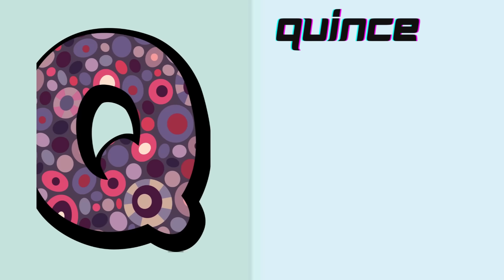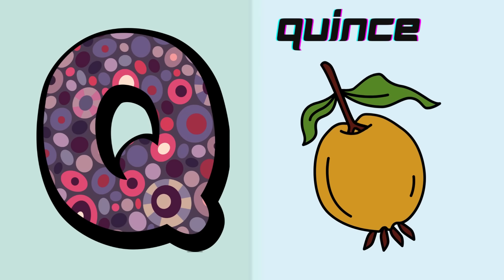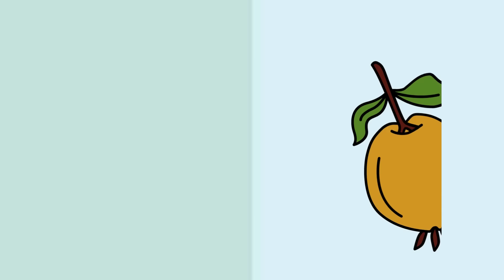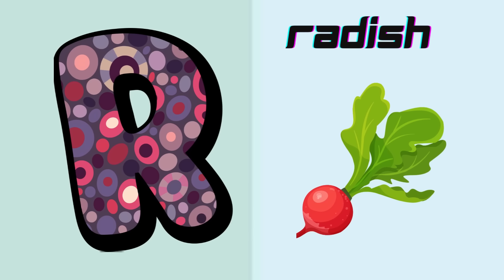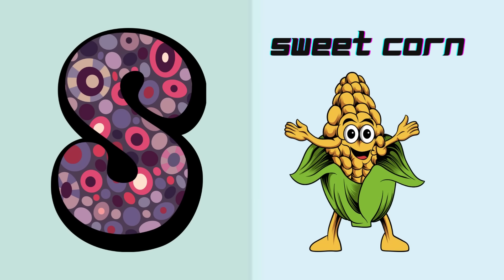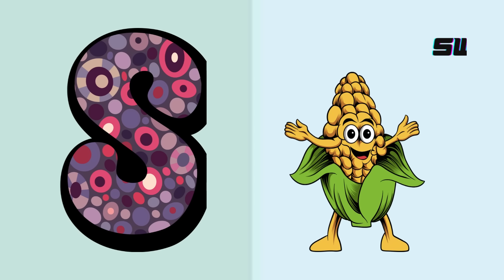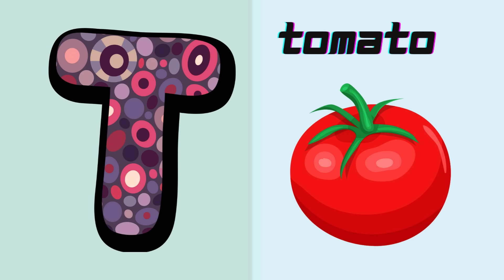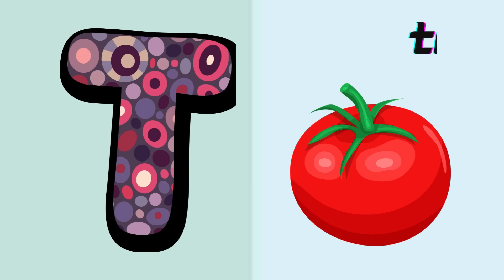Q is for quince, qu, qu, quince. R is for radish, r, r, radish. S is for sweet corn, s, s, sweet corn. T is for tomato, t, t, tomato.